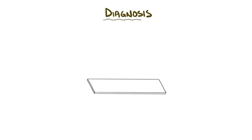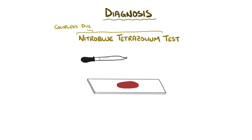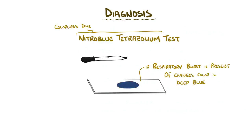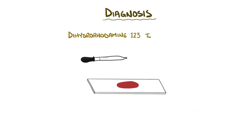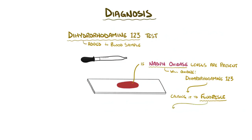The most common way to diagnose chronic granulomatous disease is by testing neutrophil function in a blood sample. A classic test is the nitro-blue tetrazolium test, where a colorless dye called nitro-blue tetrazoleum is added to the blood sample — if the respiratory burst is working properly, superoxide ions are produced and react with the dye, changing its color to deep blue. A newer test is the dihydrorhodamine-123 test, where if NADPH oxidase levels are normal, the enzyme will oxidize dihydrorhodamine-123, causing it to fluoresce. How much it shines is directly proportional to the amount of functional NADPH oxidase.